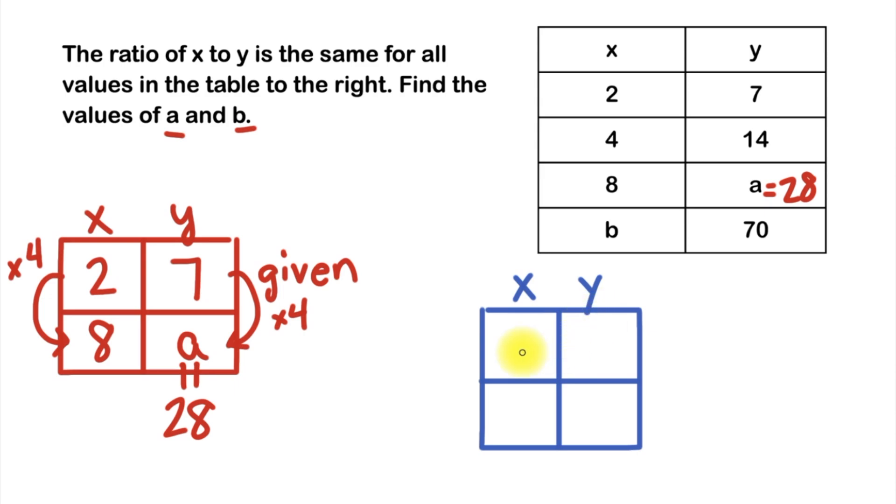Next we'll write in the labels for our table. This column is x and this column is y. Remember the first row is for a given ratio that we have, so we should have both values up top here. The best idea is to use the smallest numbers you have, so it's a better idea to use 2 and 7. So let's write that in: under x we'll put 2 and under y we'll put 7.